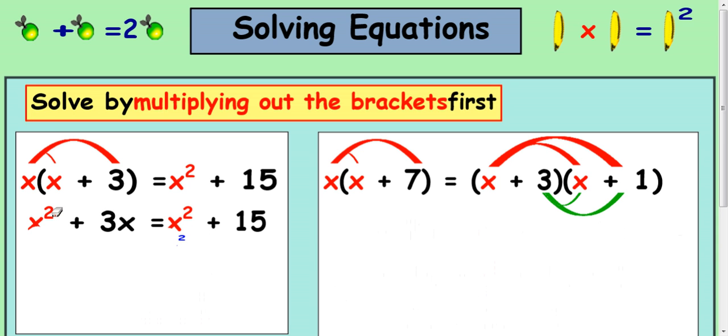Now what this does is it gives you x squared on both sides, and the easiest thing to do is cancel them out. You've got the same thing on both sides. You can take them away from both sides. That just really gives you down to 3x equals 15, which is pretty handy. Divide by 3 and you get your answer of 5.